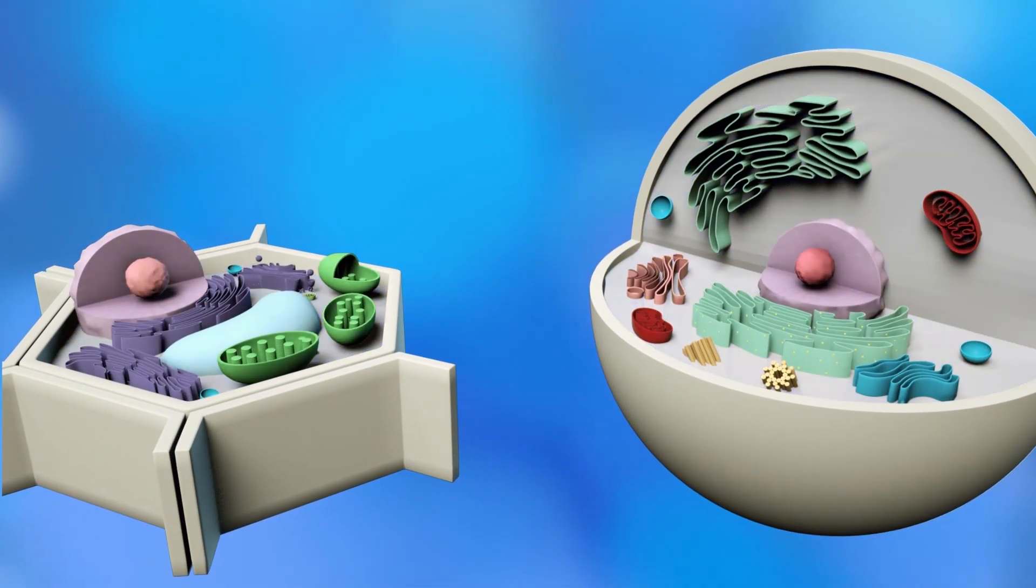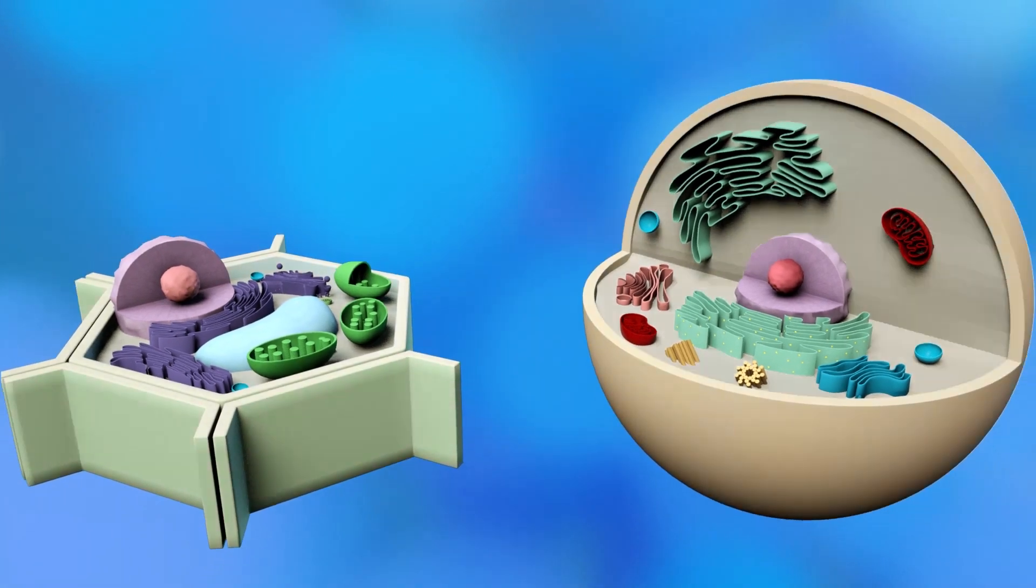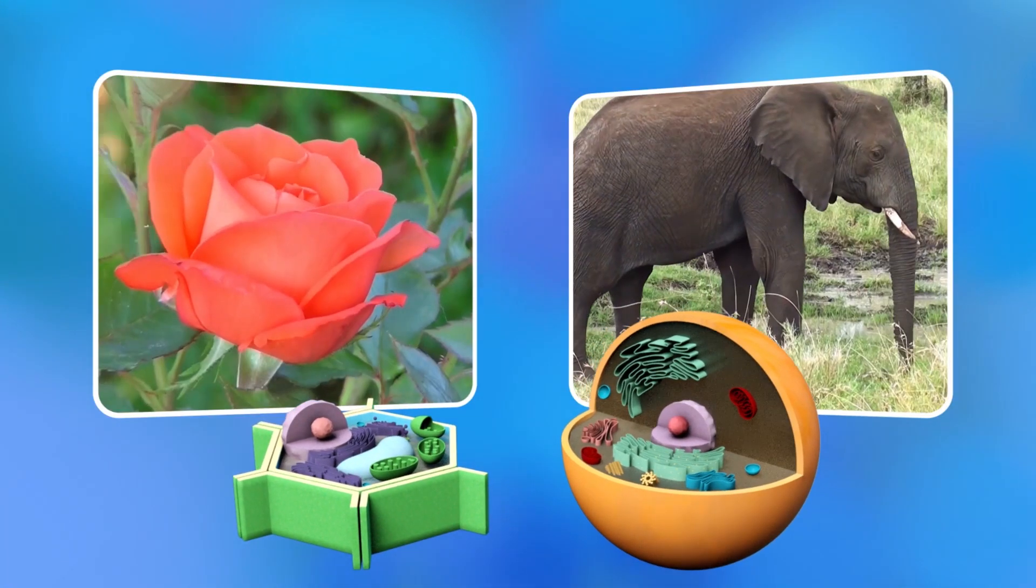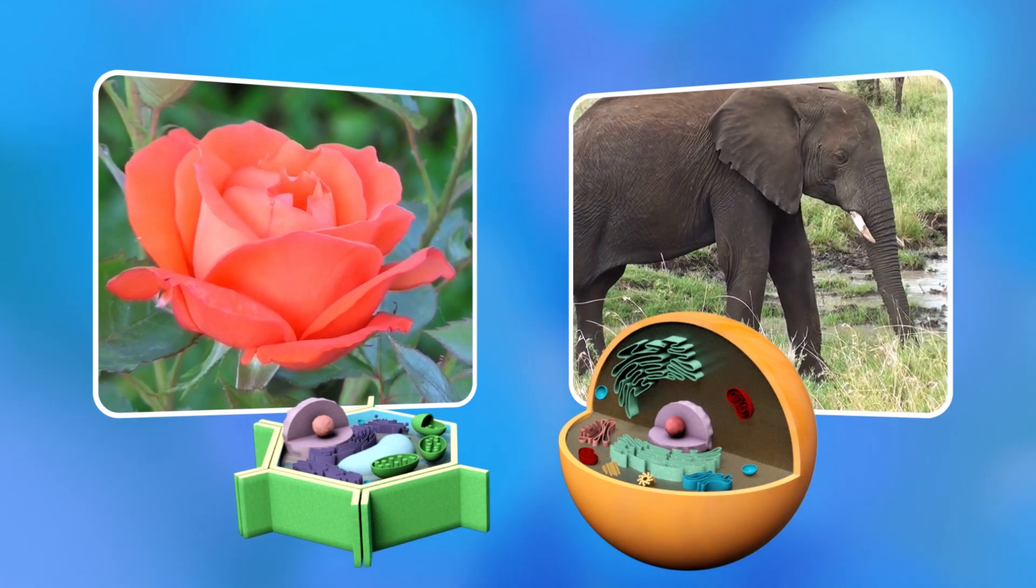Organelles are found in the cytoplasm of eukaryotic cells. Eukaryotic cells can be plant cells or animal cells.